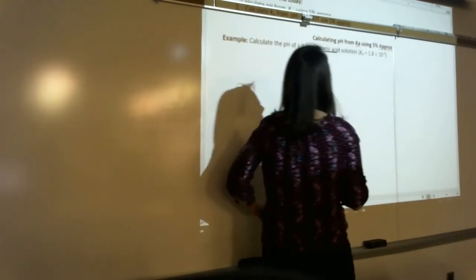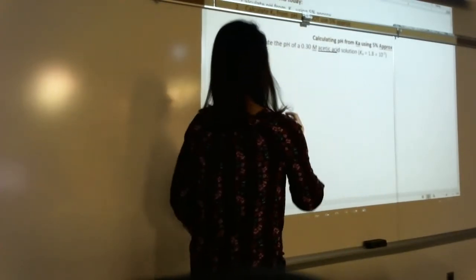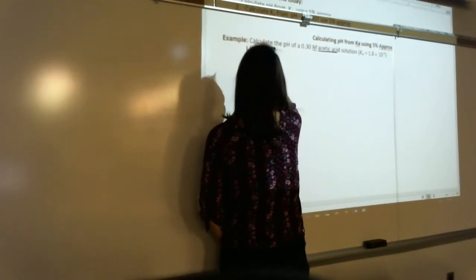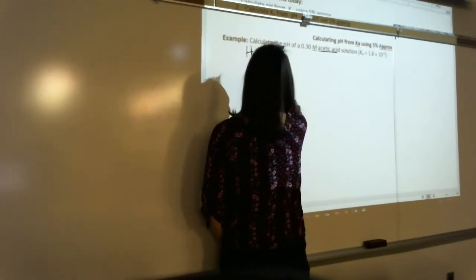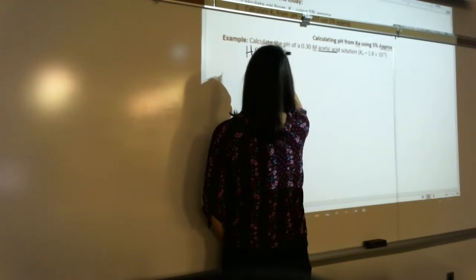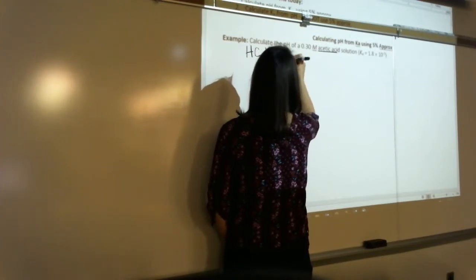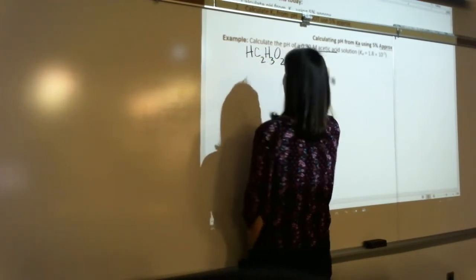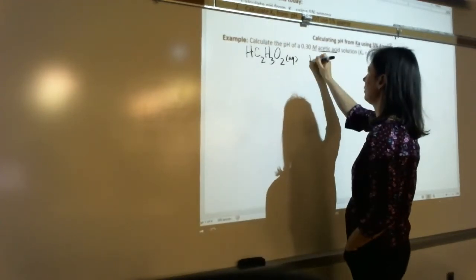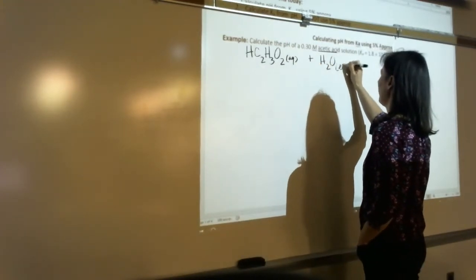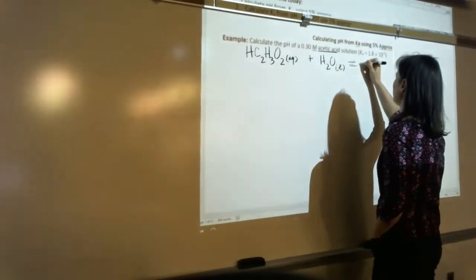Okay, this is acetic acid. So what's the formula for acetic acid? It comes from acetate. So that's H C2 H3 O2, right? So we always begin by writing our dissociation equation because you can't do an ICE table without a reaction.